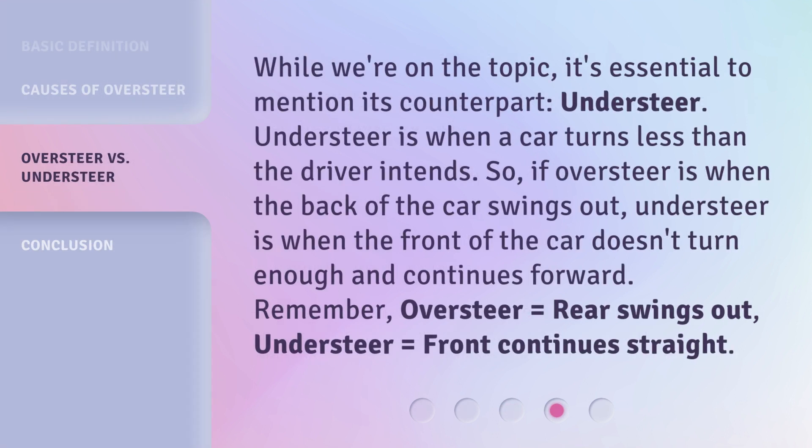While we're on the topic, it's essential to mention its counterpart: understeer. Understeer is when a car turns less than the driver intends. So if oversteer is when the back of the car swings out, understeer is when the front of the car doesn't turn enough and continues forward. Remember: oversteer equals rear swings out, understeer equals front continues straight.